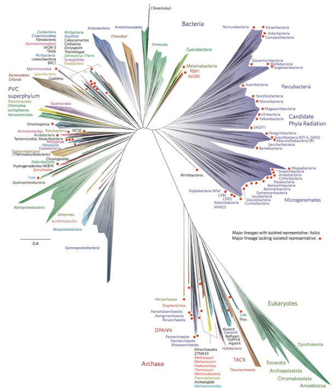At each period of growth all the growing twigs have tried to branch out on all sides, and to overtop and kill the surrounding twigs and branches, in the same manner as species and groups of species have tried to overmaster other species in the great battle for life. The limbs divided into great branches, and these into lesser and lesser branches, were themselves once, when the tree was small, budding twigs, and this connection of the former and present buds by ramifying branches may well represent the classification of all extinct and living species in groups subordinate to groups.